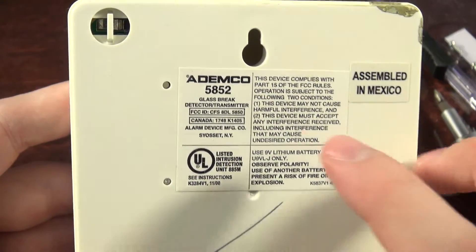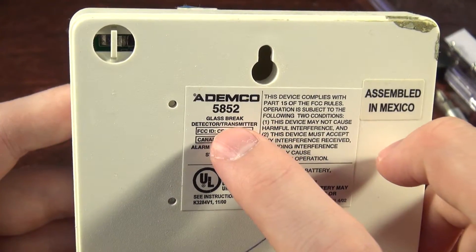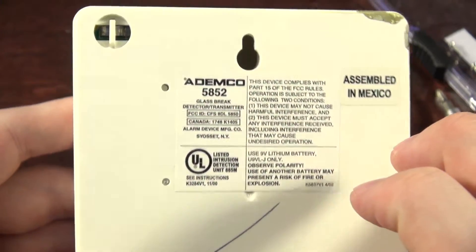More security junk. So we've got a Demko 5852, which is a glass break detector and it's a transmitter, of course, since it's entirely wireless here.